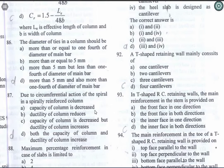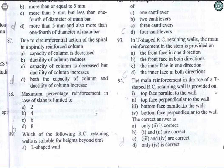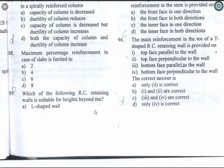Question 93: In a T-shaped RC retaining wall, the main reinforcement in the stem is provided on the inner face in one direction. Question 94: The main reinforcement in the toe of a T-shaped RC retaining wall is provided on the bottom face perpendicular to the wall — Option D is the correct answer. So for the stem it is the inner face in a single direction, and for the toe it is the bottom face perpendicular to the wall.